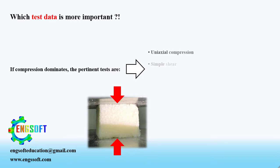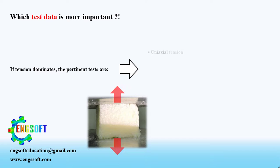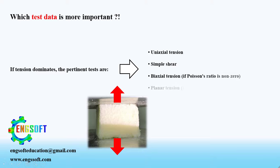How to recognize which test data is more vital for simulating the foam material in Abacus? If compression dominates in the problem, the pertinent tests are uniaxial compression, simple shear, planar compression, and volumetric compression. If tension dominates, the pertinent tests are uniaxial tension, simple shear, biaxial tension, and planar tension.